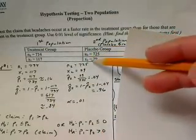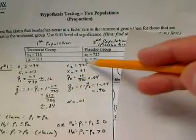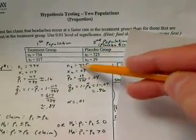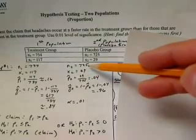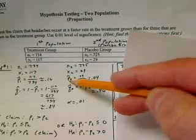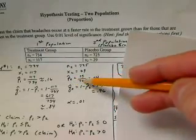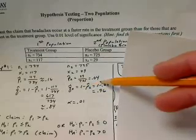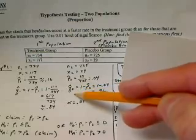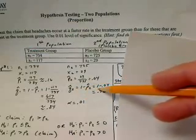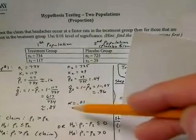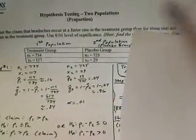In the second population, denoted with subscript 2, the placebo group, we have 725 people sampled. Out of those, 29 people experienced a headache, for a sample proportion of 29 over 725, or 0.04. The complement Q̂₂ is 1 minus 0.04, or 0.96. The level of significance, as stated in the question, is 0.01.